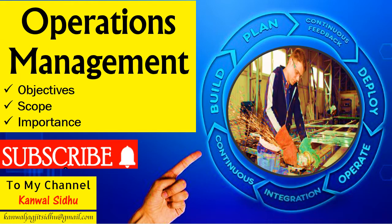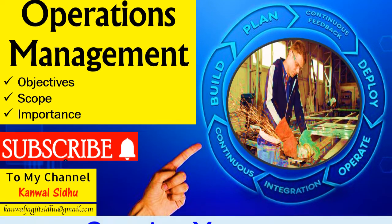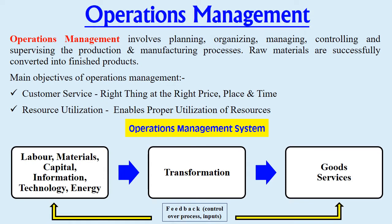In this lecture session we will study the objectives of operations management followed by the system. Operations management is a combination of two words: operations plus management. It involves planning, organizing, managing, controlling, and supervising the production and manufacturing processes. We can say that OM is a core management activity which involves transformation or conversion of input into output in the form of goods and services, where raw materials are successfully converted into finished products.